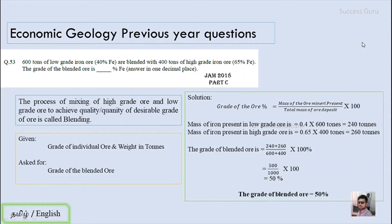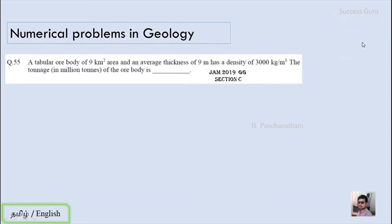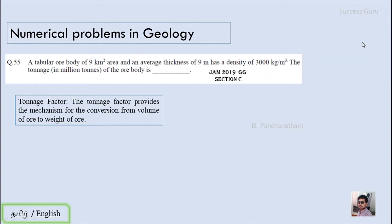The actual grade of the resultant ore is the average between these two, and the volume of the ore has been increased — that is the result of blending. The second question is from JAM 2019, Section C, question number 55. A tabular ore body of 9 square kilometer area and an average thickness of 9 meters has a density of 3000 kg per cubic meter. The tonnage of the ore body is dash. Let us discuss the term tonnage factor.